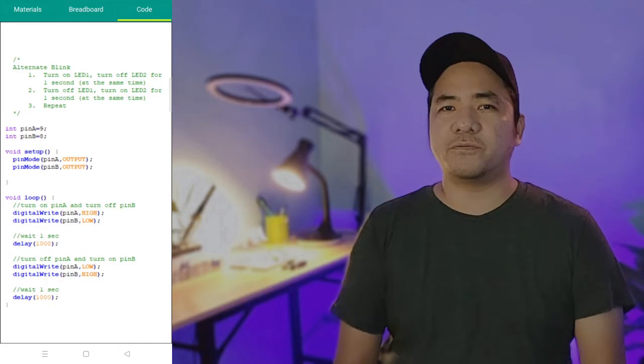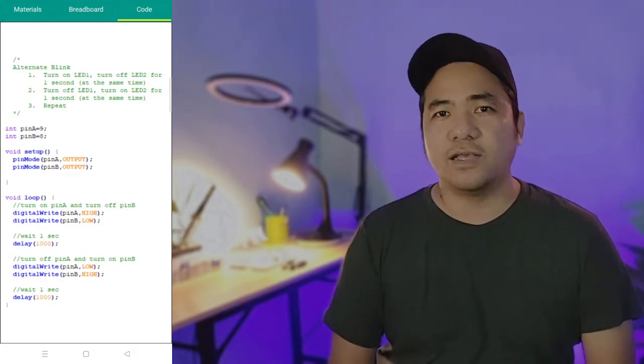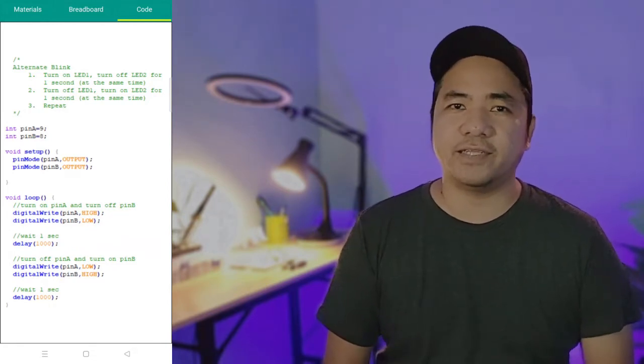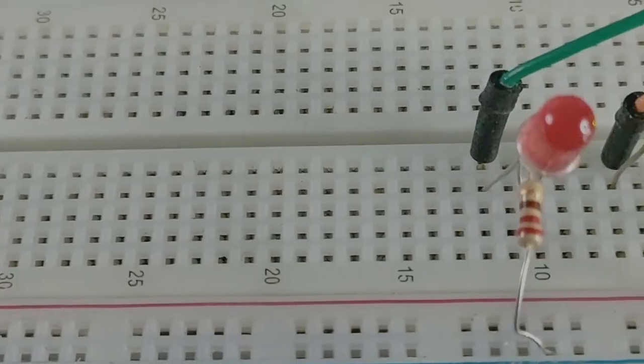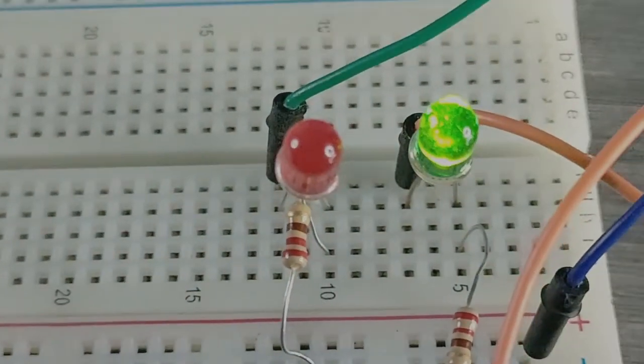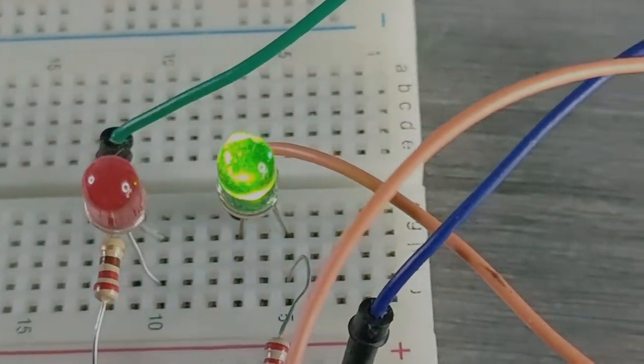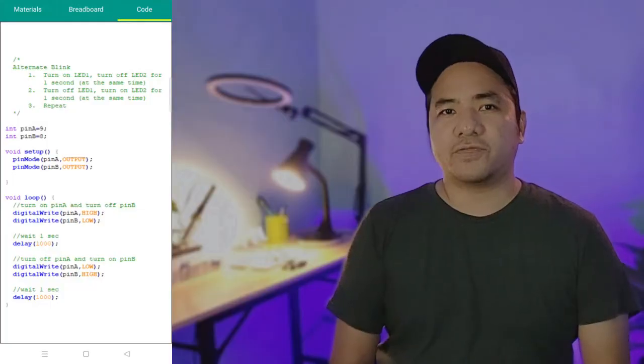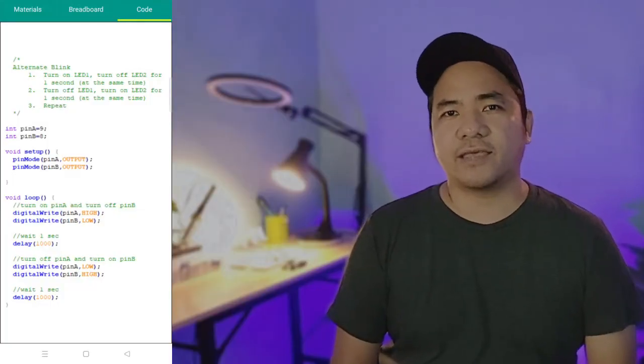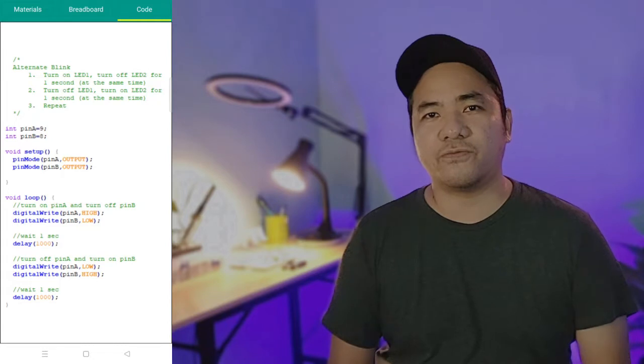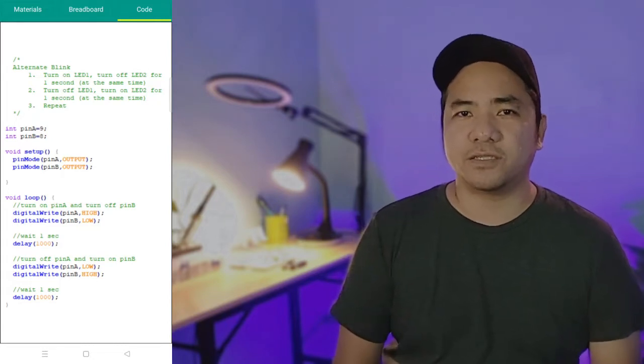Now onto the code. Remember, our objective is to turn on and turn off each of the LEDs separately. What you want is to turn on LED1 and at the same time turn off LED2. And after a delay of one second, LED1 will be turned off while LED2 will be turned on.